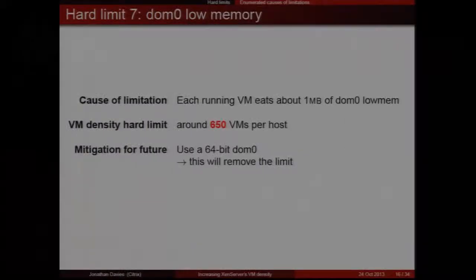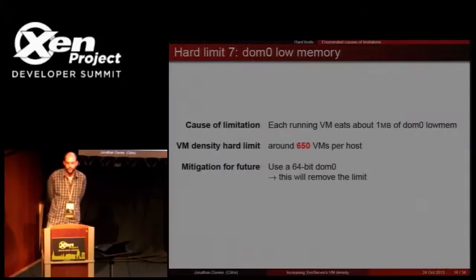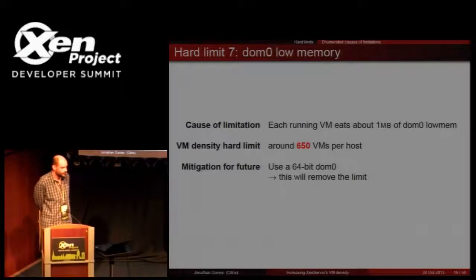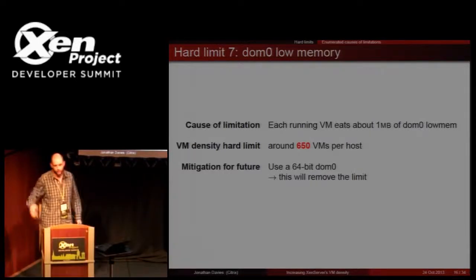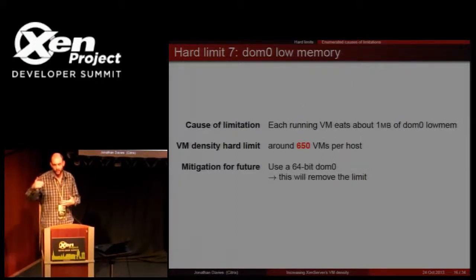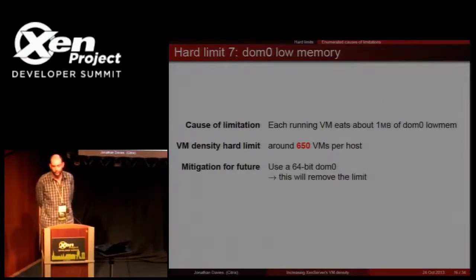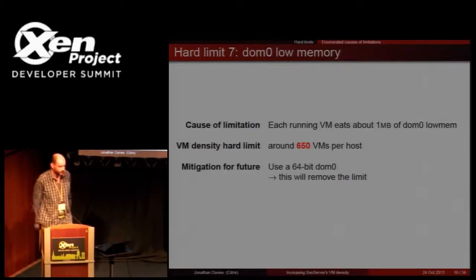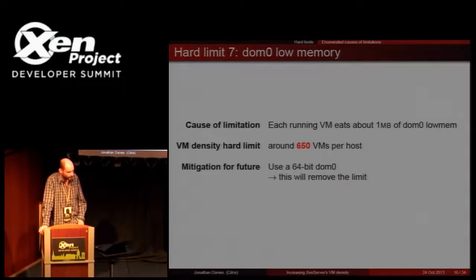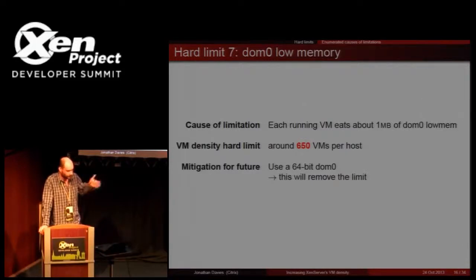Hard limit number seven — the final one — is DOM0 low memory. We found empirically that each running VM consumes about one megabyte of DOM0 low memory. When you subtract the amount used by other things, you're left with about 650 VMs before you run out. Running out of low memory means the OOM killer kicks in and almost certainly kills completely the wrong thing. Using a 64-bit DOM0 would avoid this problem by providing a homogeneous memory address space.